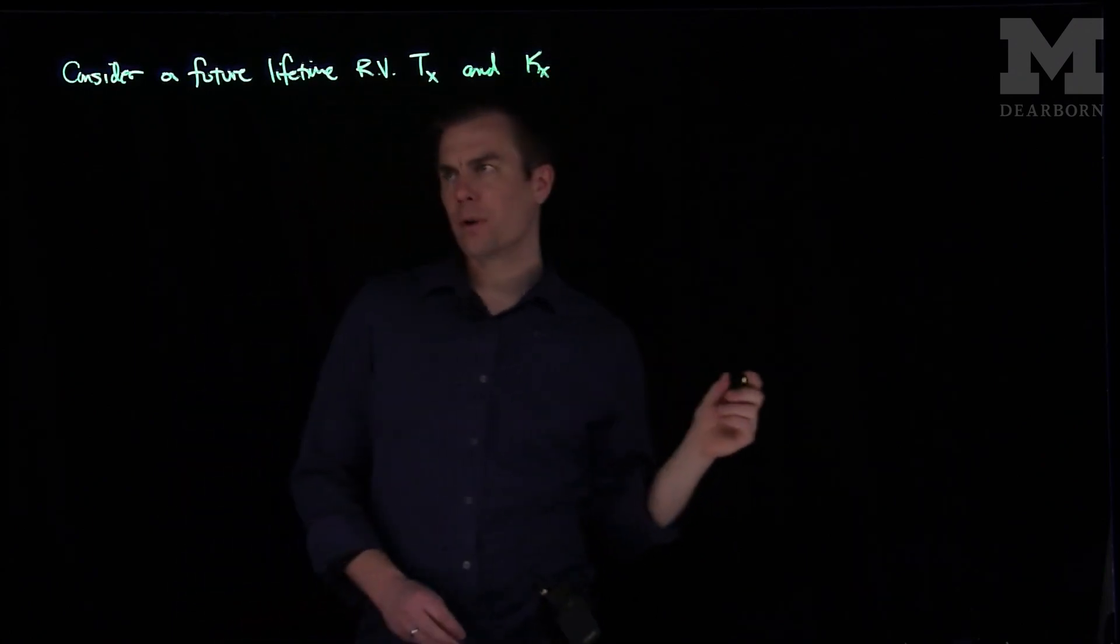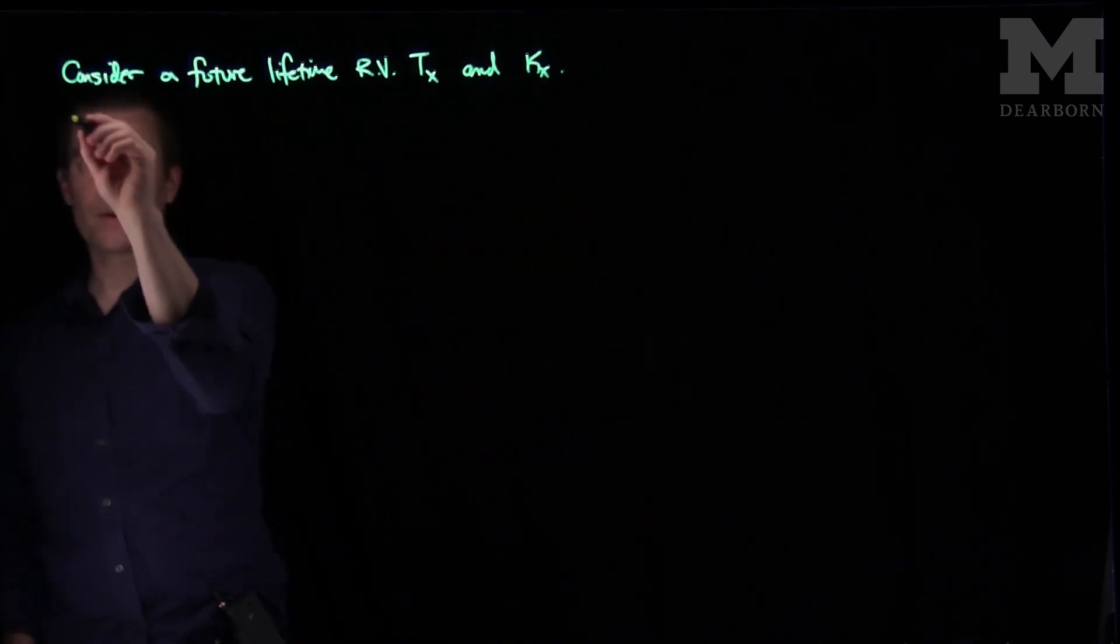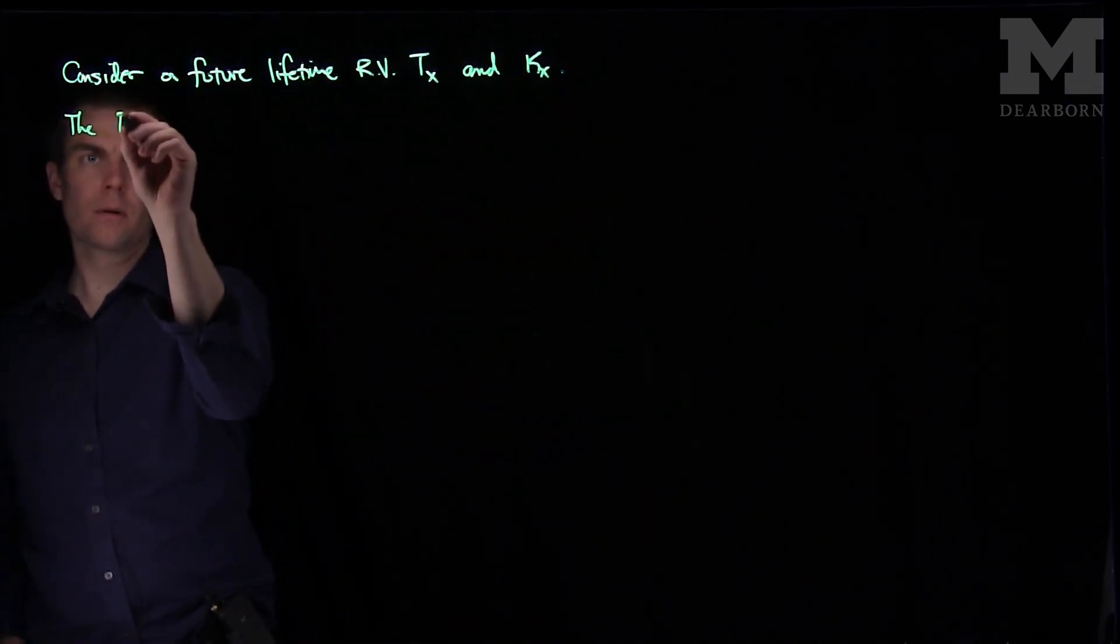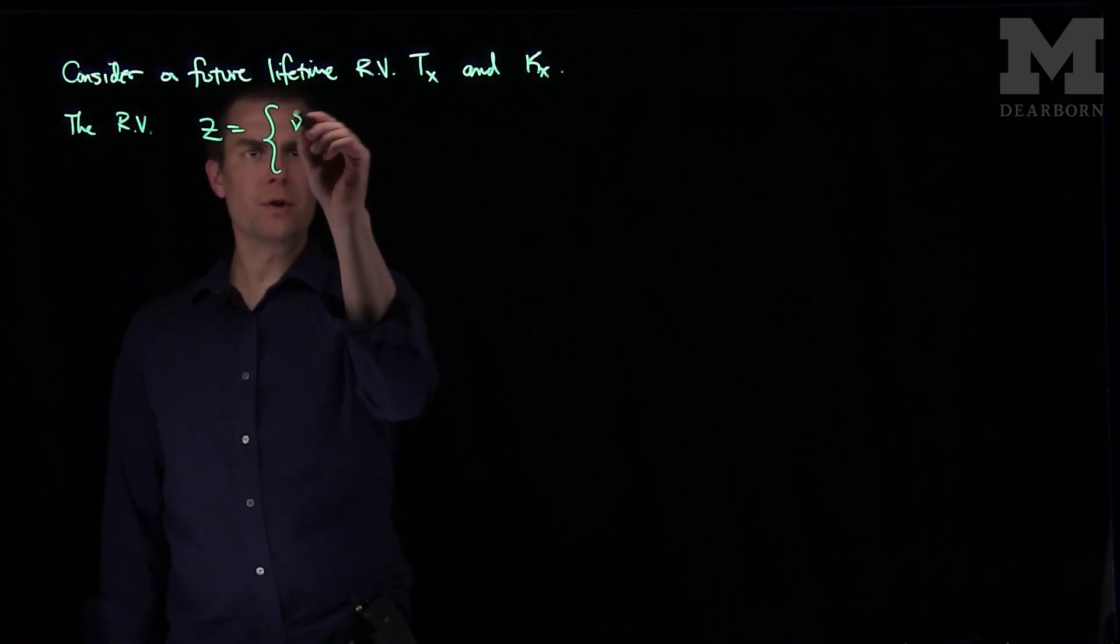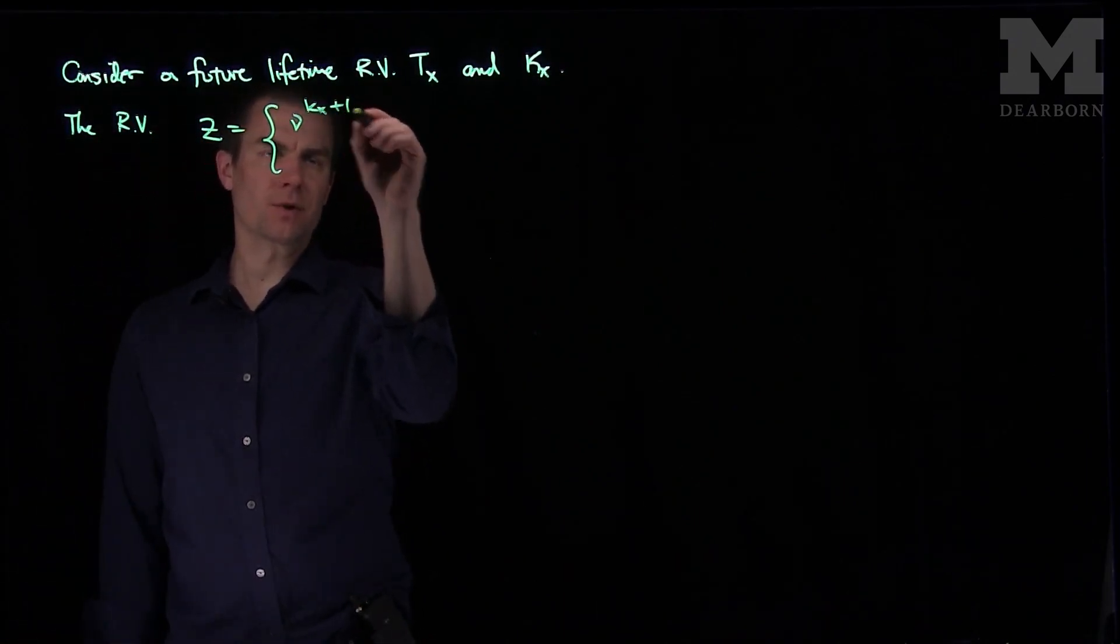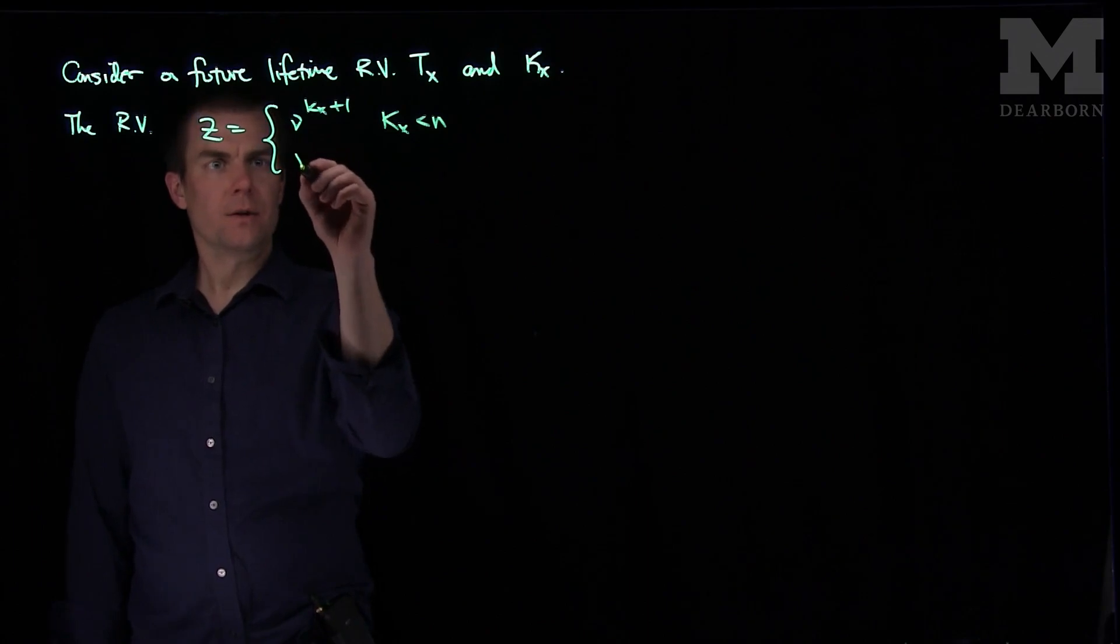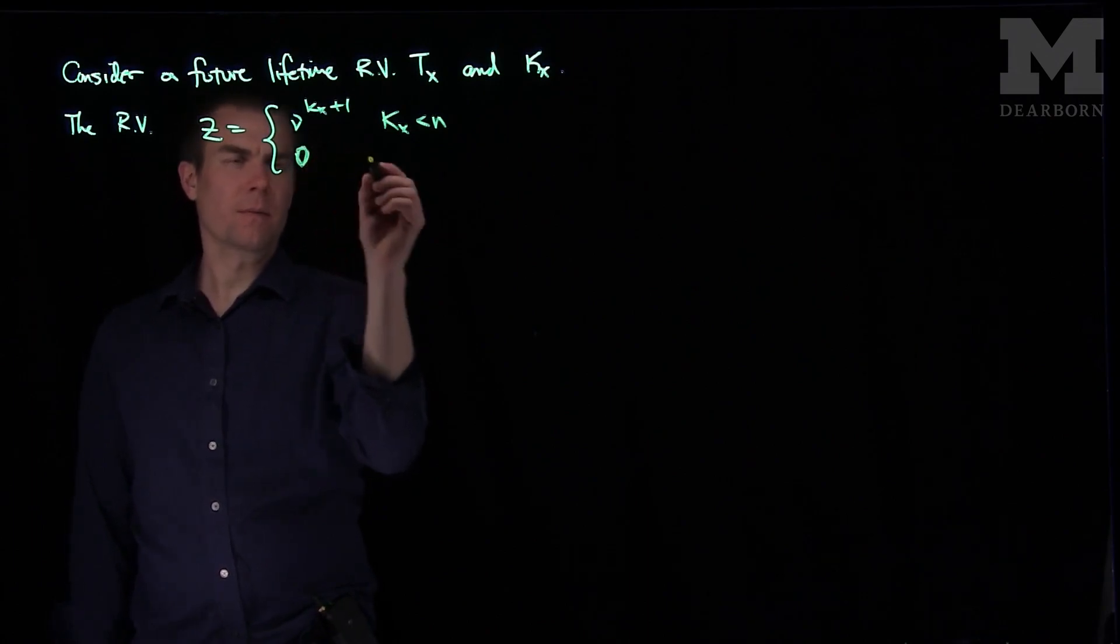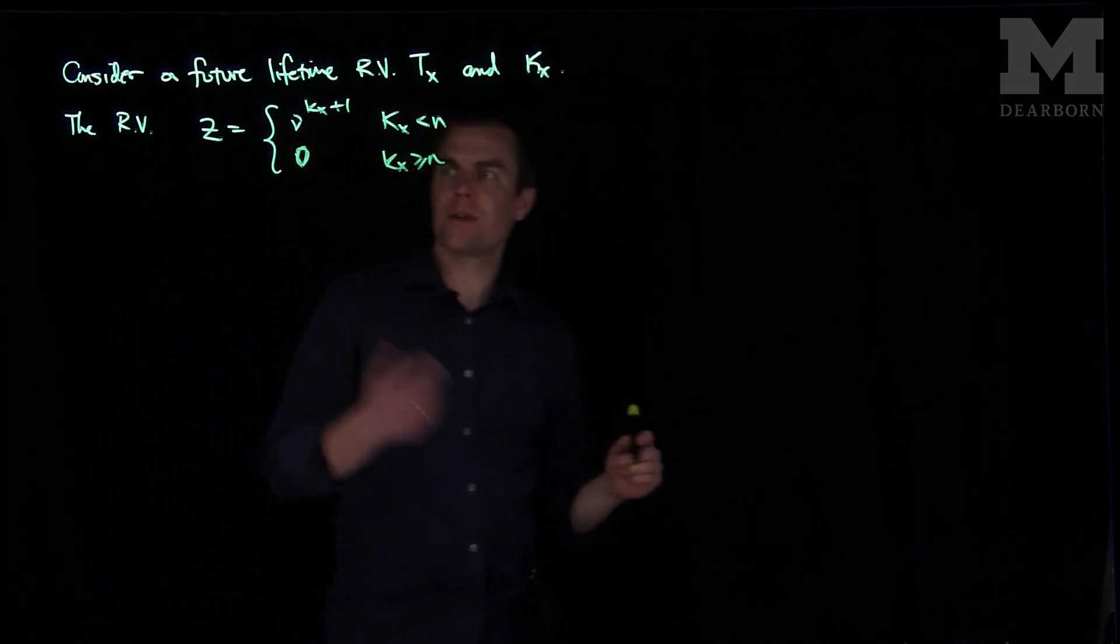And what we'll do is we'll consider the random variable z, which is ν to the kx plus 1 if kx is strictly less than n, and ν to the 0 if kx is greater than or equal to n. This is an n-year term insurance.